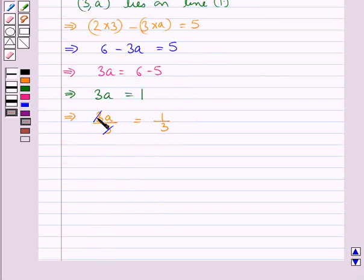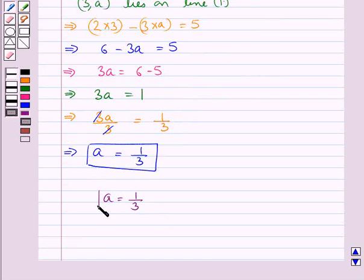3, 3 gets cancelled. So we get A is equal to 1 upon 3. So our final answer is A equal to 1 upon 3.